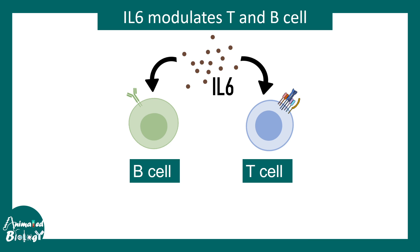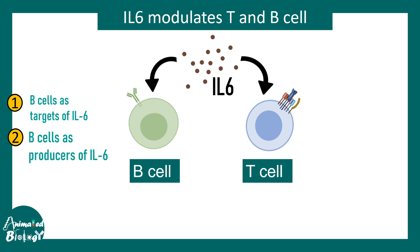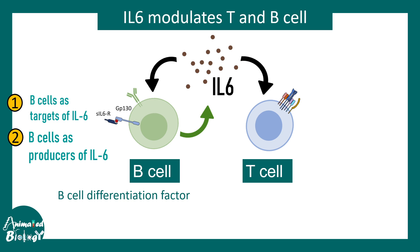Interleukin-6 can trigger B cell and T cell responses. Interleukin-6 was first known to be a triggering factor of B cell differentiation, so it was initially called B cell differentiation factor. B cells are both a target and a producer of interleukin-6. It turns out B cells undergo specific trans-signaling — B cells don't have the interleukin-6 receptor but have the co-receptor GP130, and the trans-signaling regime will be clarified shortly.